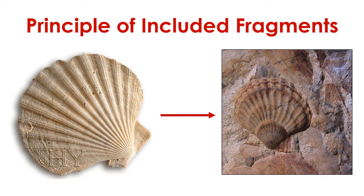A related principle is called the principle of included fragments. According to this principle, if a rock contains a fragment of something like another piece of rock or a fossil, then the rock must be younger than the fragment. Think about how a fossil forms. Fossils come from organisms. Those organisms live, die, and are buried in sediment that becomes sedimentary rock. The organism must have lived before the sediment was deposited. The fossil fragment must be older than the rock around it.